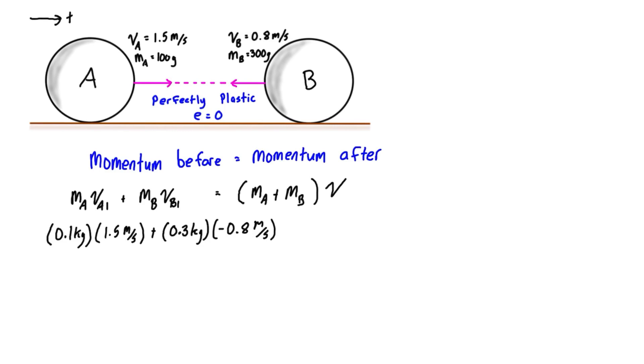This is going to be equal to mA plus mB, so that's 400 grams, which is 0.4 kilograms, times that final velocity of the combined object.